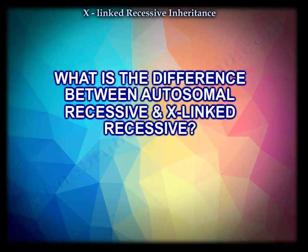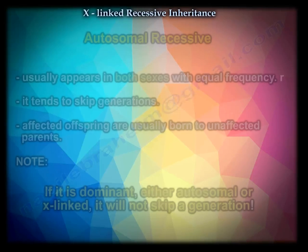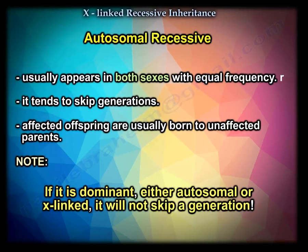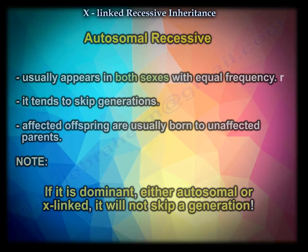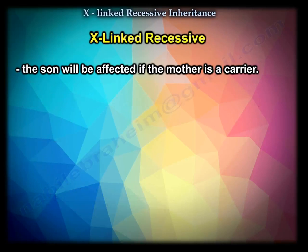What is the difference between autosomal recessive and X-linked recessive? Autosomal recessive usually appears in both sexes with equal frequency, tends to skip generations, and affected offspring are usually born to unaffected parents. If it is dominant — whether autosomal or X-linked — it will not skip a generation. The X-linked recessive will have an affected son if the mother is a carrier.